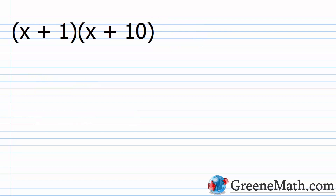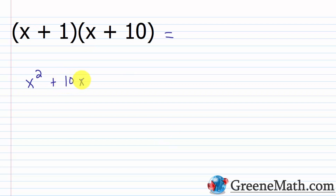Let's start by looking at the product of two binomials using the FOIL process, and then we're going to reverse it. We're going from a factored form to a trinomial, and then from the trinomial back. Doing FOIL, x times x is x². The outer gives x times 10, which is plus 10x. The inner gives 1 times x, which is plus 1x. The last is 1 times 10, which is plus 10. Combining like terms, 10x plus 1x, we end up with x² + 11x + 10.